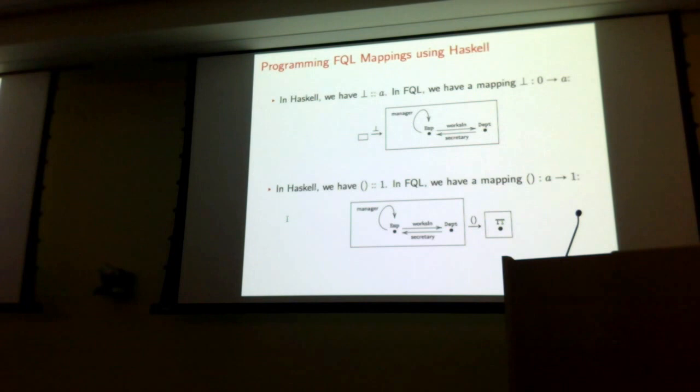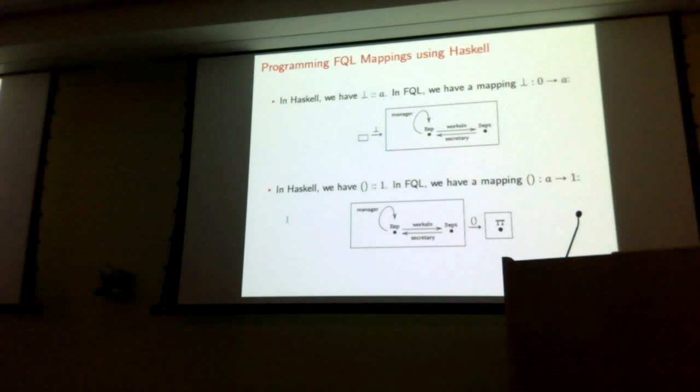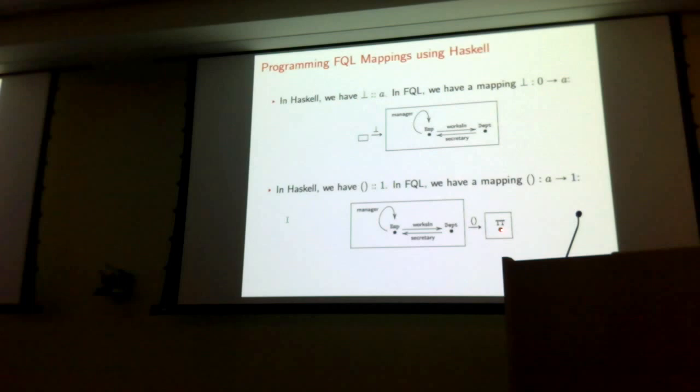In Haskell you have this unit — it creates elements of type 1 or unit type. What does that look like in FQL? For any schema, there is a unique map from it into the unit schema: it just maps all of the nodes onto the one node, and maps all of the paths onto the identity path of that one node.